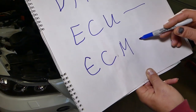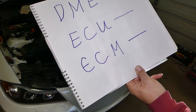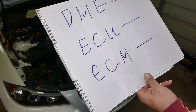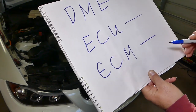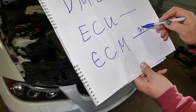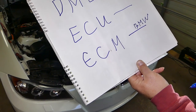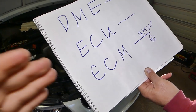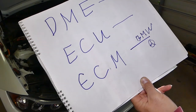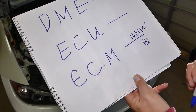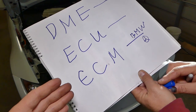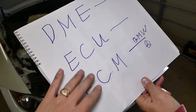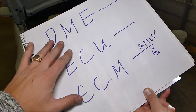Now, what is ECM? ECM is also used by German manufacturers and others. ECM stands for Engine Control Module. DME and ECM are both used quite a bit by BMW and Mercedes. So engine control module, engine control unit, and digital motor electronics — all three of those things are the same thing.